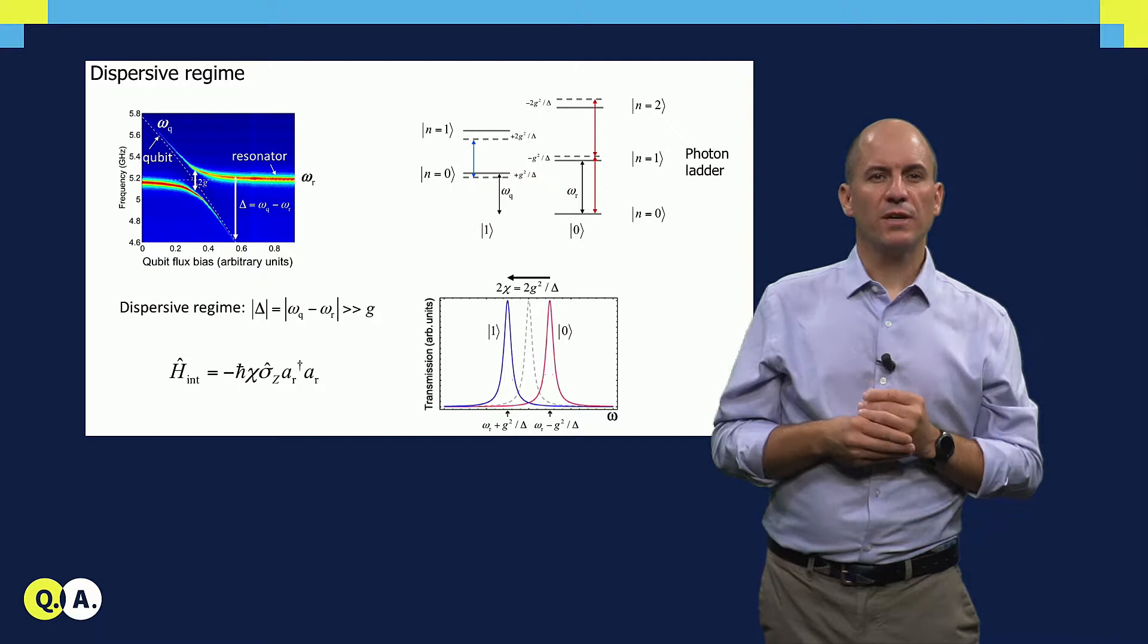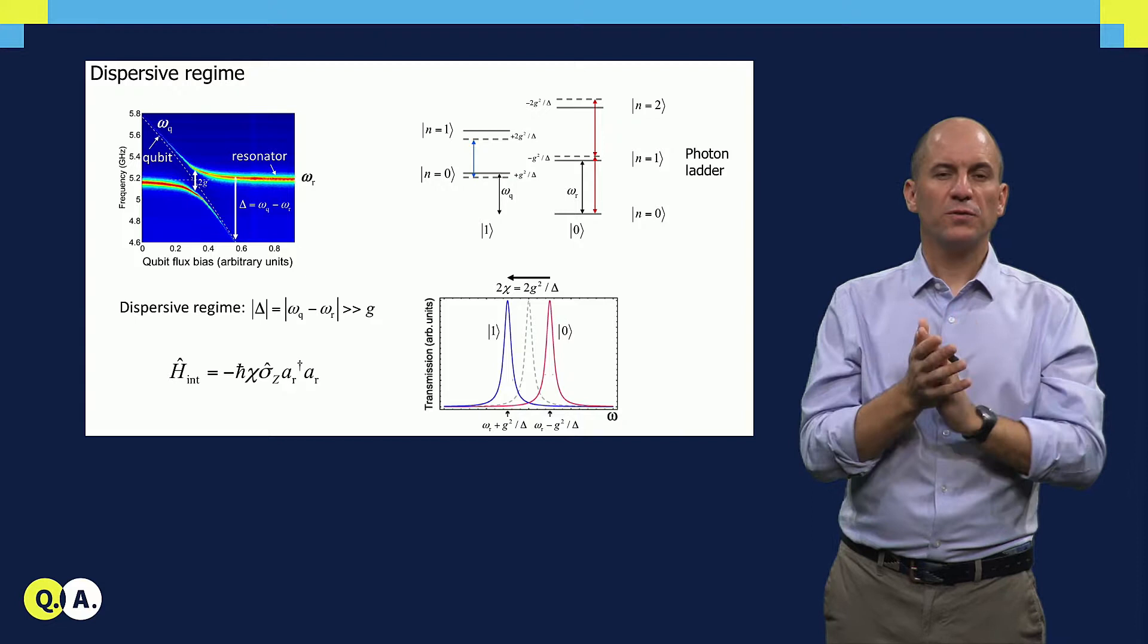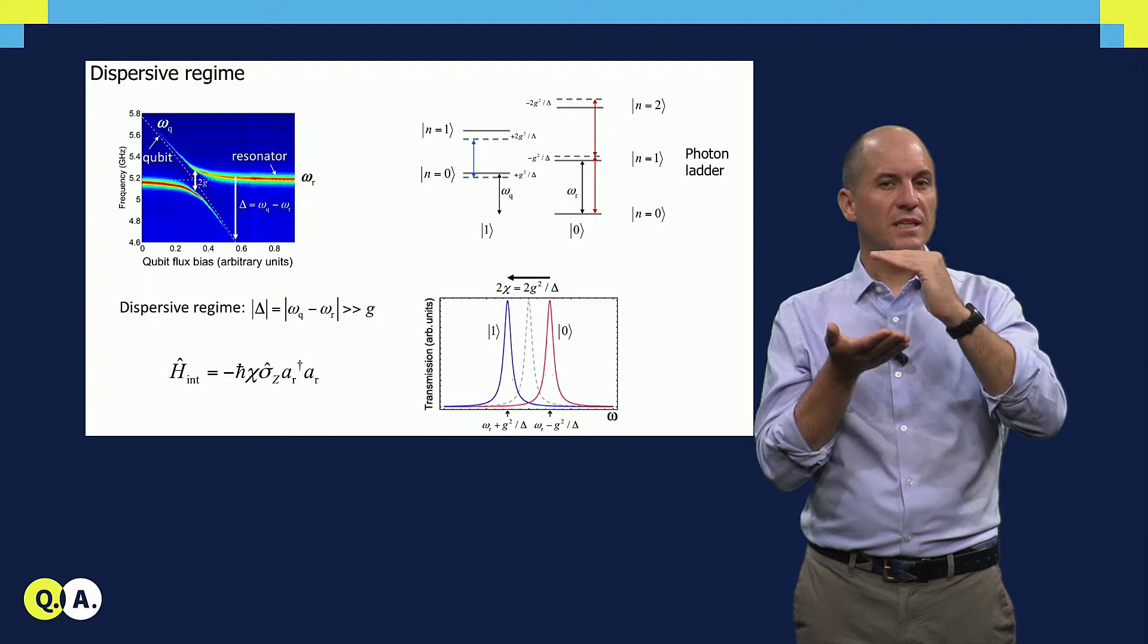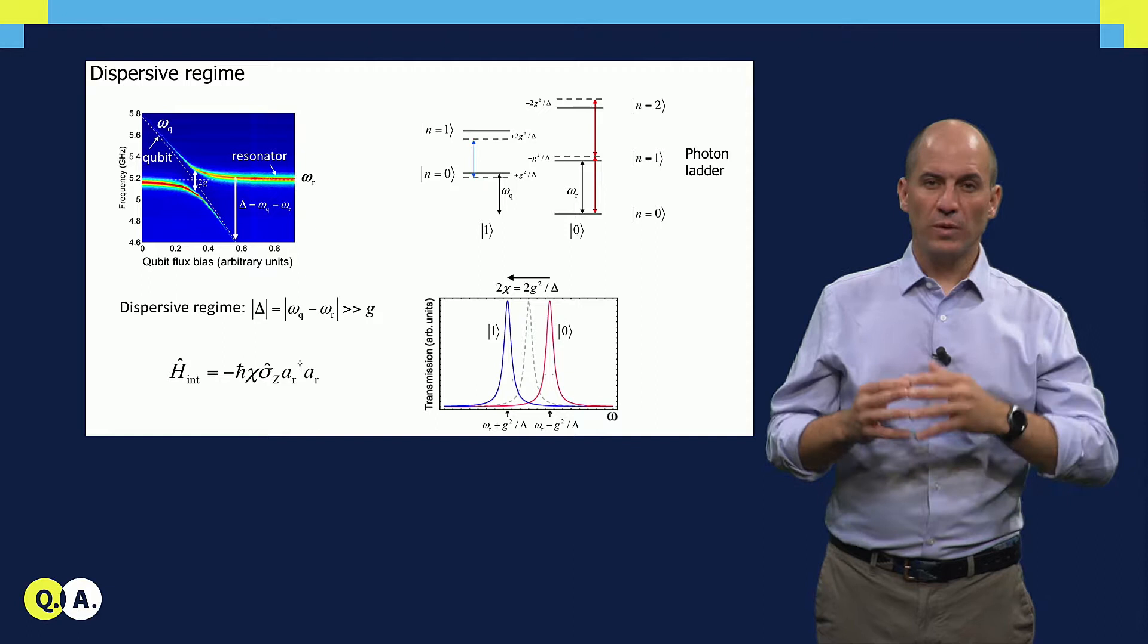In this dispersive regime, there is a small but finite remnant of the avoided crossing. If we consider the effect of the avoided crossings arising between qubit resonator levels with equal total number of excitations, we learn something very useful. The ladder of photon excitations remains harmonic, but the resonance frequency depends on the state, zero or one, of the qubit. This dependence of the resonator frequency on qubit state is the key ingredient allowing qubit readout.